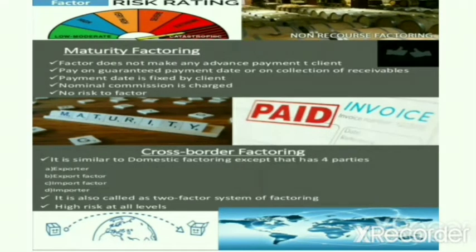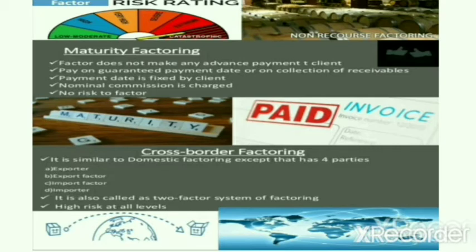The next type is maturity factoring, which involves no financing — only services. The factor provides the client with a credit guarantee for all customers whose orders are approved prior to shipment, shielding the client from bad debt losses. It is then the factor's responsibility to collect net sales proceeds from the customer. On the average due date for each month's sales, the factor turns over the accumulated funds to the client. No interest is charged, since the client has taken no advances prior to the theoretical maturity date. The factor remits to the client whether or not it has actually received payment from the client's customers. The client pays a fee or service charge computed as a commission on net sales. Thus maturity factoring does not make any advance payment to the client — payment is made on a guaranteed payment date or on collection of receivables, with a nominal commission charged and no risk to the factor.